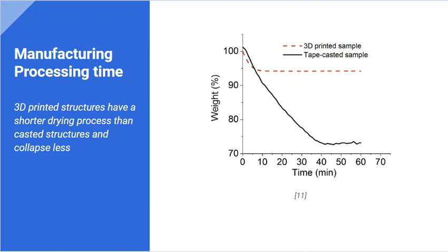As for the manufacturing processing time, it takes longer to print an electrode than to cast it, but casting has a longer post-processing process. Thus, it can be concluded that additive manufacturing greatly reduces the amount of time required to dry the structure, and reduces its collapse, as shown in the graph, since it is during the drying phase that structures collapse.